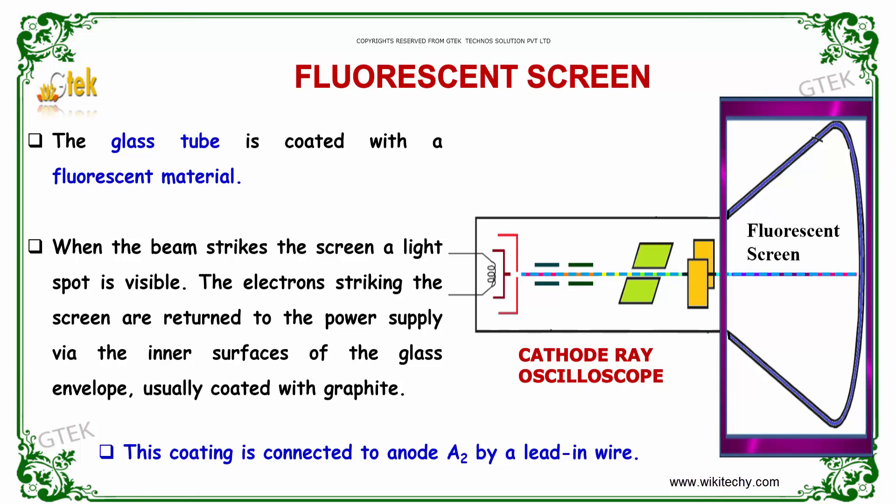Let us now discuss about the fluorescent screen. The glass tube is coated with a fluorescent material. When the beam strikes the screen, a light spot is visible. The electrons striking the screen are returned to the power supply through the inner surface of the glass envelope which has been usually coated with graphite. This coating is connected to the anode A2 by a lead-in wire.